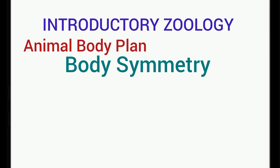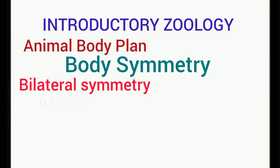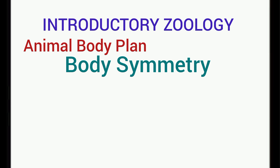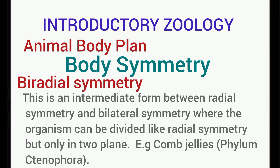Bilateral symmetry is exhibited by advanced animals such as vertebrates. It involves a situation whereby the body is organized such that it can be divided into two equal halves which are mirror images of each other through only one plane. Bi-radial symmetry is a kind of symmetry between radial symmetry and bilateral symmetry. In this case, the organism can be divided into two equal halves which are mirror images of each other through two planes only, and this is found in the comb jelly in the phylum Ctenophora.